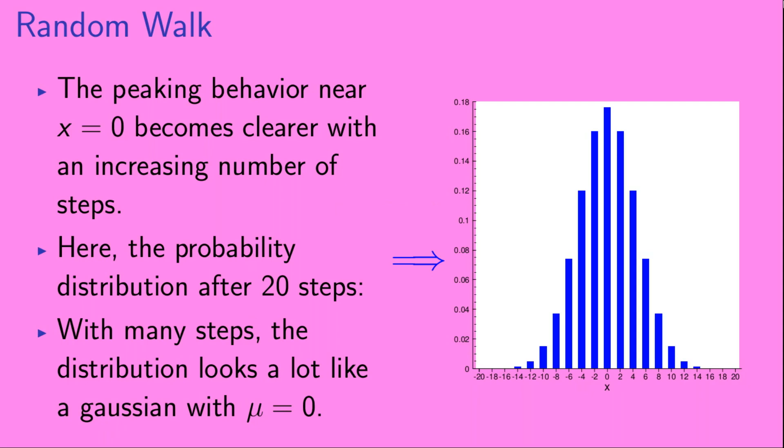So, the peaking behavior near x equals 0 becomes clearer with an increasing number of steps. Here, we show the probability distribution after 20 steps. With many steps, the distribution looks a lot like a Gaussian with mu equals 0.